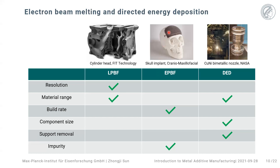Also, for laser systems the beam is guided by two mechanical mirrors, so the speed of laser movement is limited by the mechanical movement of the mirrors. For the electron beam, everything is controlled electronically, so the speed is a lot faster, resulting in a faster build rate compared to the laser system. Lastly, for the DED process, since it does not need to lay any powders before printing, there is really no size limitation in terms of how big it can print.